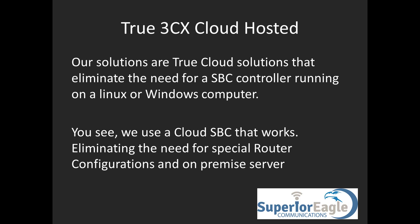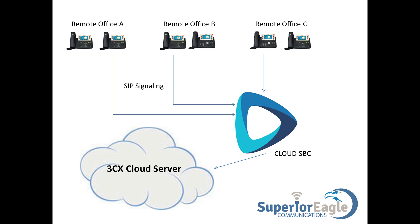We use a cloud SBC that eliminates the need for special router configurations and an on-premise server. Here is a visual. You have your remote locations, you have all your remote phones. In this example there are three remote locations, two phones — that's just for a visual; you can have 50 phones, 100 phones, it doesn't matter. They all route through our cloud SBC, making sure the SIP signaling is correct, eliminating the need for you to have all these Linux or Windows servers running 3CX's version of their session border controller and creating a headache down the road. Maintaining our solution eliminates all that, and it just works.